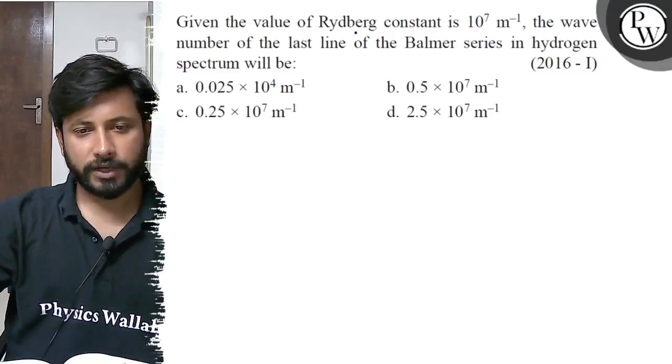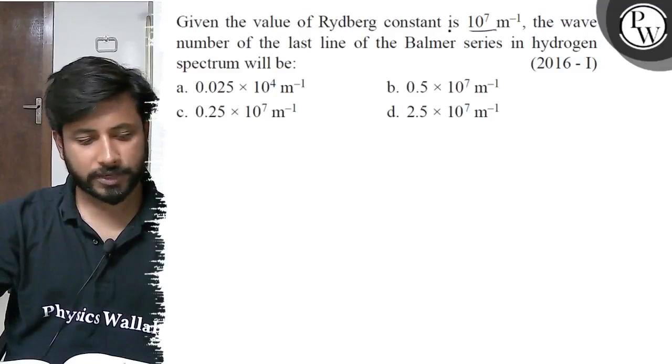Hello, let us see this question. Given the value of Rydberg constant is 10^7 per meter, the wave number of the last line of the Balmer series in the hydrogen spectrum will be: